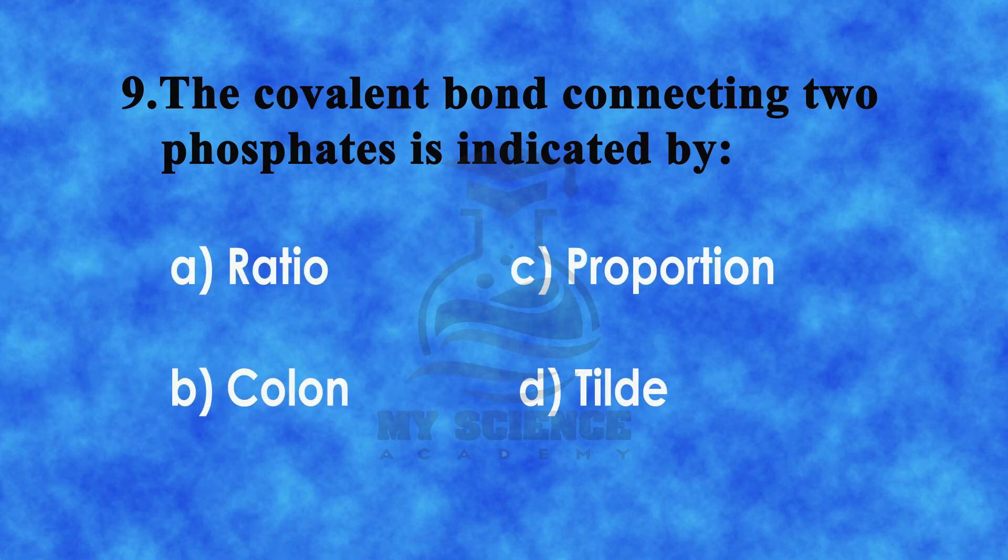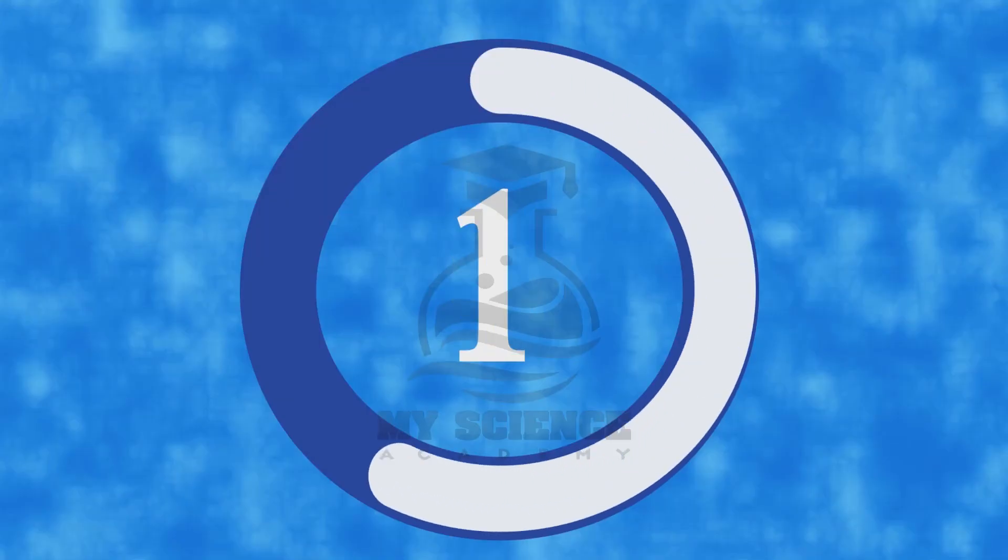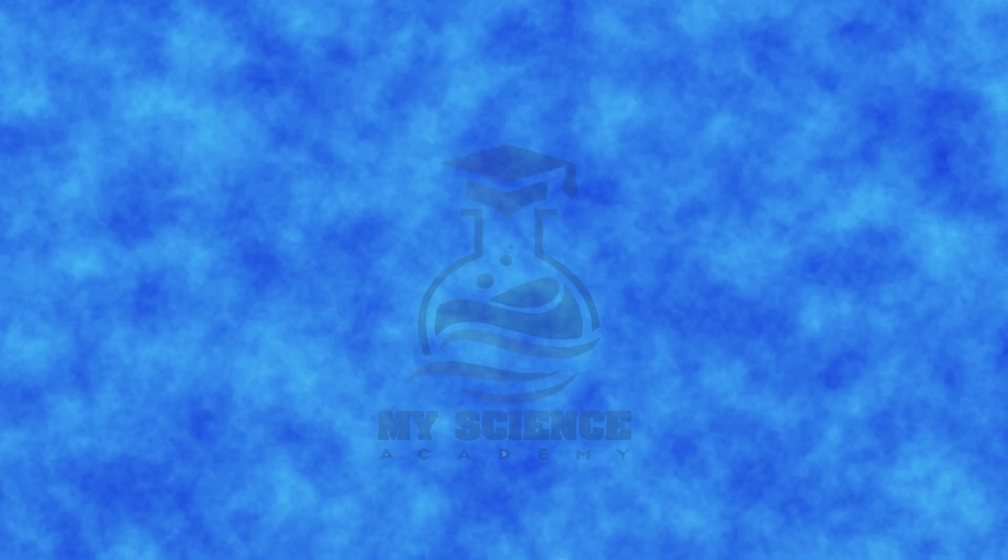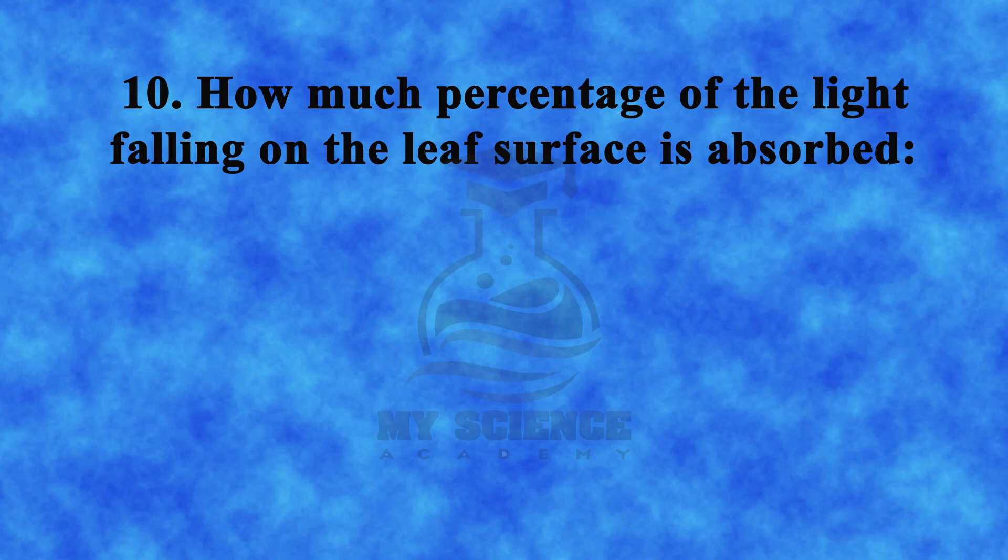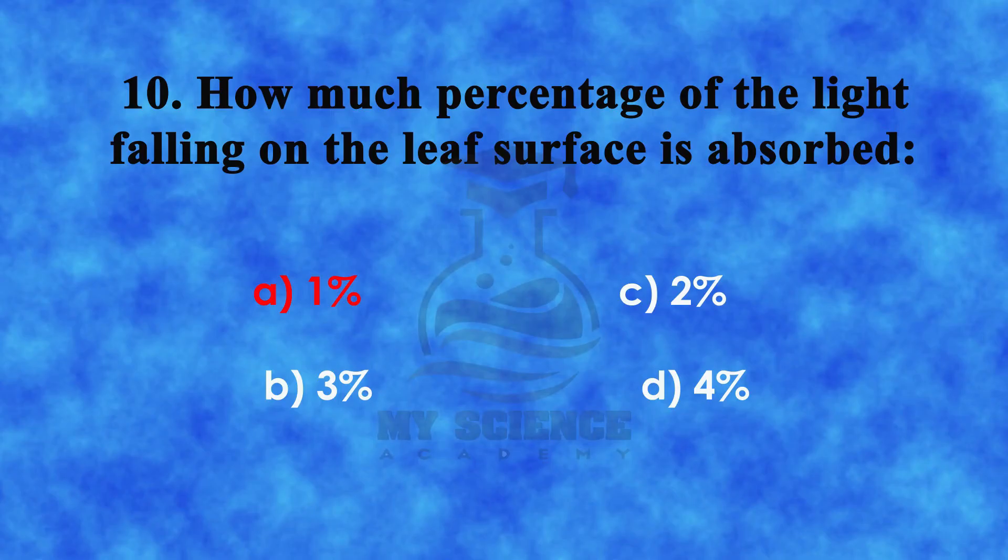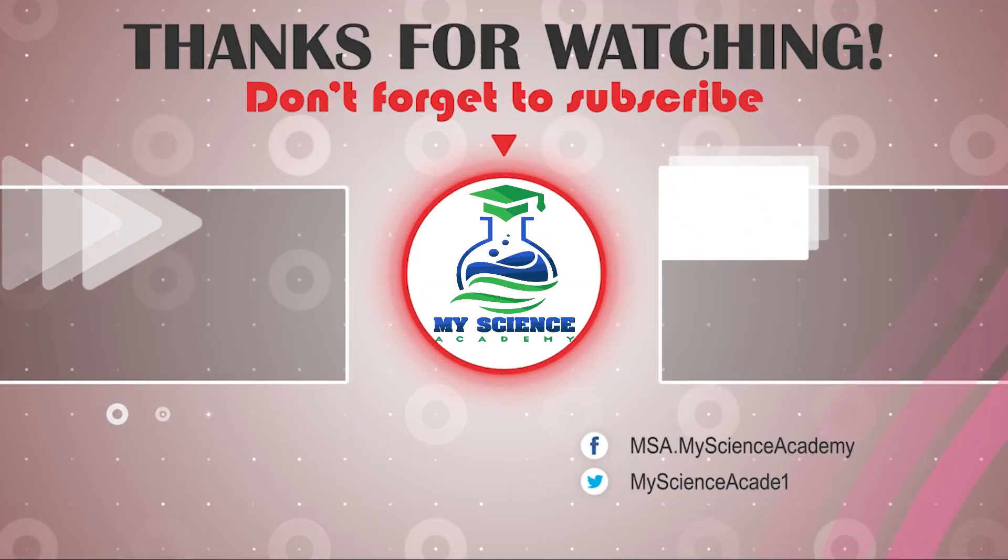The correct answer is d) tilde. Question 10: How much percentage of the light falling on the leaf surface is absorbed? a) 1%, b) 3%, c) 2%, or d) 4%. The correct answer is a) 1%.